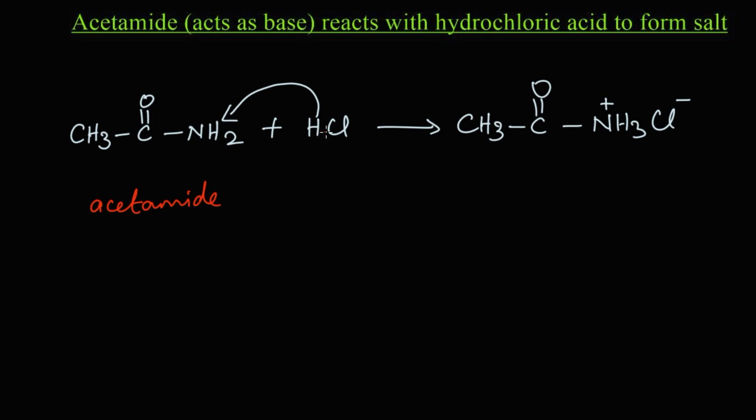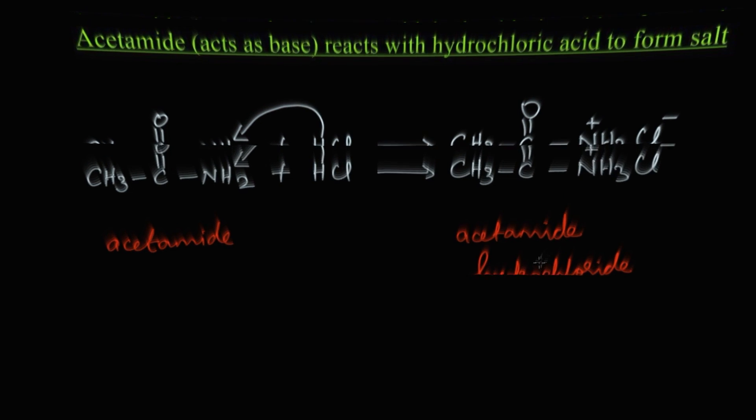Acetamide reacts with HCl, that is hydrochloric acid, to form acetamide hydrochloride, which is a salt. Let's summarize the reaction: acetamide acts as a base, that is a weak base, it reacts with the acid hydrochloric acid and forms a salt acetamide hydrochloride. This proves that acetamide has a basic character.